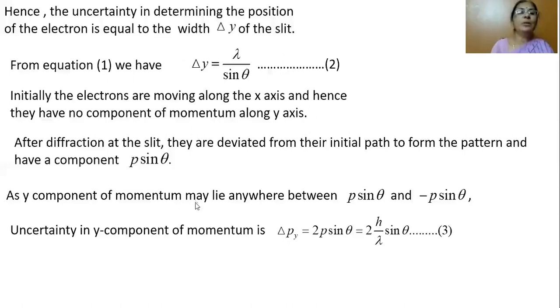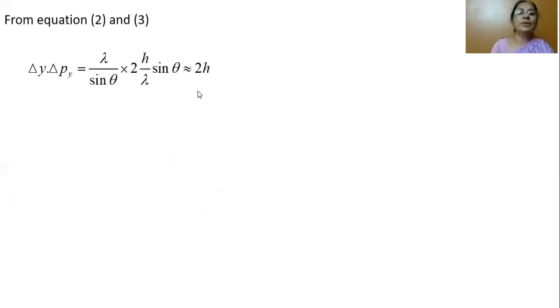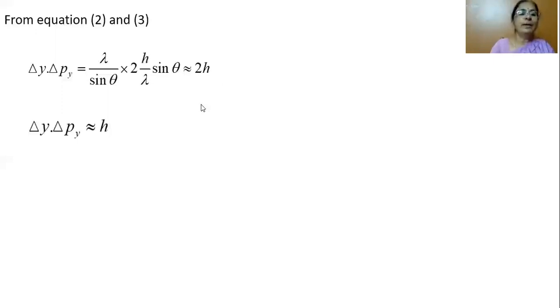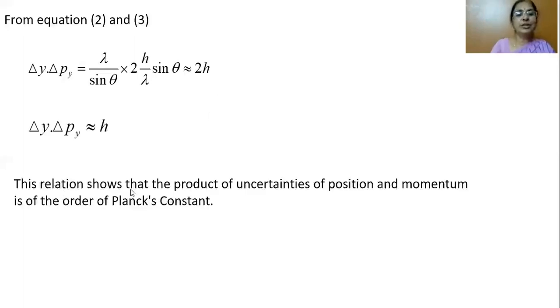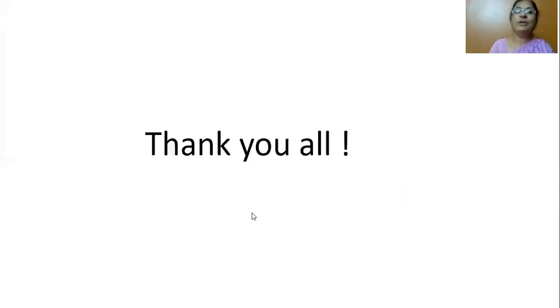The uncertainty in the y component of momentum delta py equals p sin theta minus of minus p sin theta, giving 2p sin theta. From de Broglie hypothesis, p equals h by lambda, so the uncertainty in momentum along y is 2h sin theta by lambda. Multiplying the two uncertainties, the product delta y times delta py simplifies to approximately 2h. Thus, the product of uncertainties in position and momentum is of the order of Planck's constant, verifying the uncertainty principle.